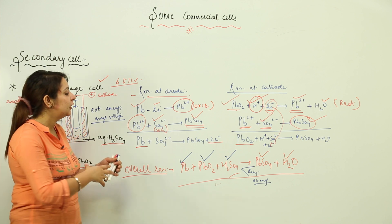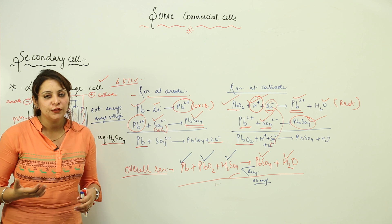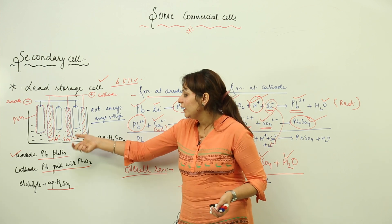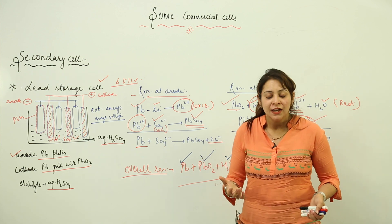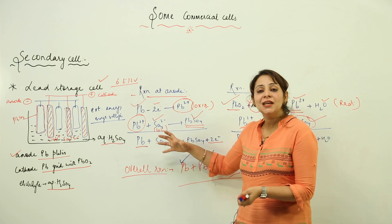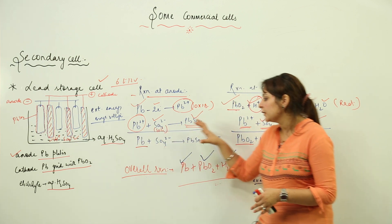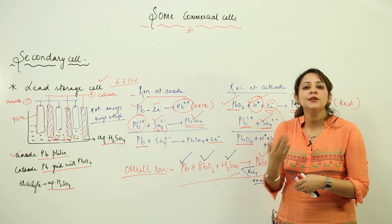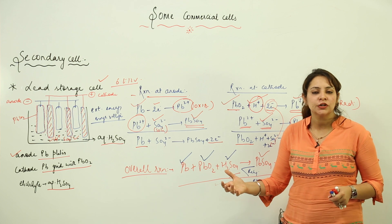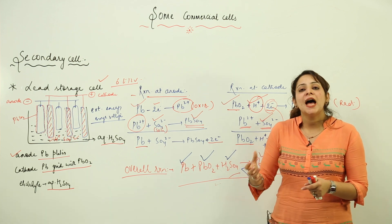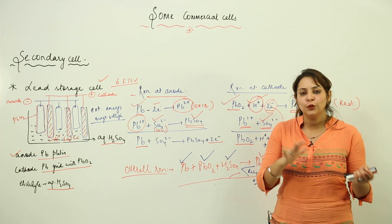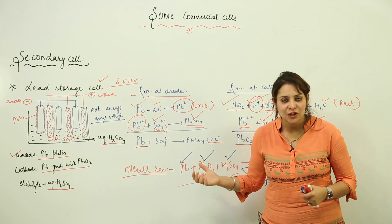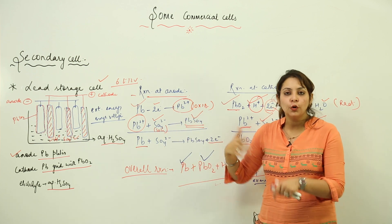The lead storage cell can act as both a galvanic cell and an electrolytic cell. During discharge, the spontaneous reaction converts chemical energy into electrical energy — it acts as a galvanic cell. Once the PbSO₄ layer builds up and the reaction stops, we supply external energy to reverse the reactions — it acts as an electrolytic cell. The key advantage is that it can be recharged and reused again and again.